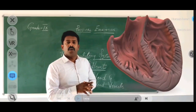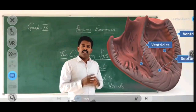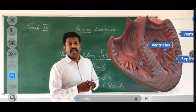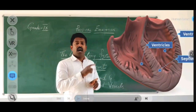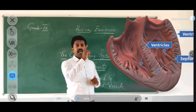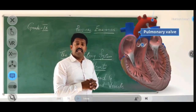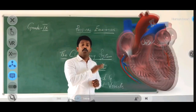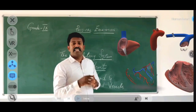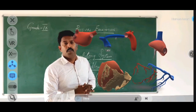Inside the heart we have the pulmonary artery and the pulmonary vein. At the top we have the aorta, which circulates the purified — that is, the oxygenated — blood to all parts of the body.